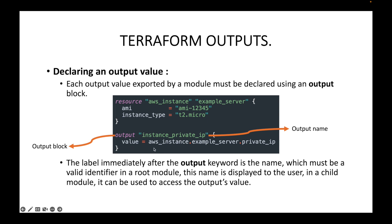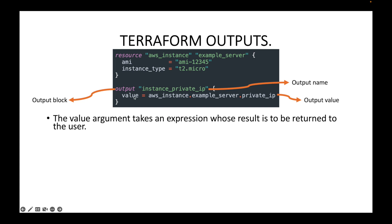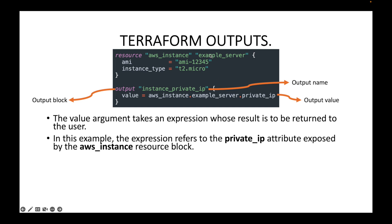Here we have the value that needs to be returned. I'm calling this resource — you can see aws_instance.example_server — and then I'm telling it to return the private IP of this resource. Likewise, if you want to return the public IP, this will be public_ip. The value argument takes an expression whose result is to be returned to the user. In this example, the expression refers to the private IP attribute exposed by this aws_instance resource block.